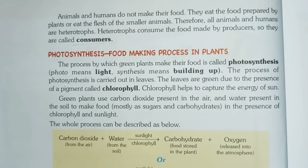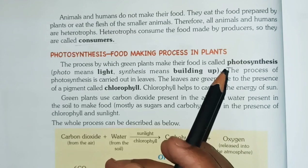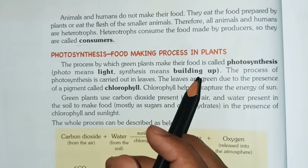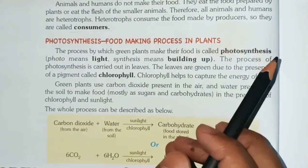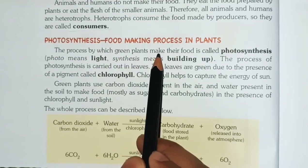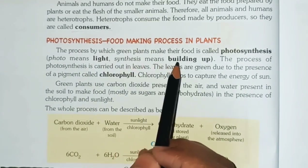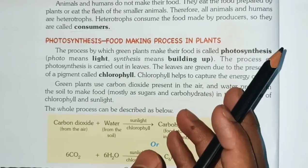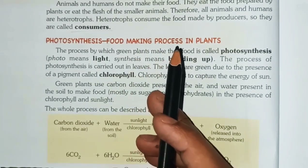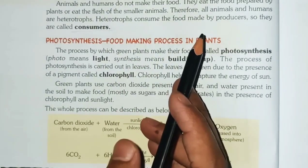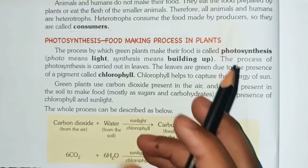Now we will discuss the topic of photosynthesis. Photosynthesis is the process by which plants make their own food. Photo means light and synthesis means to build up or produce. So by the help of light, the photosynthesis process is conducted — that is, by light, food is prepared by green plants.